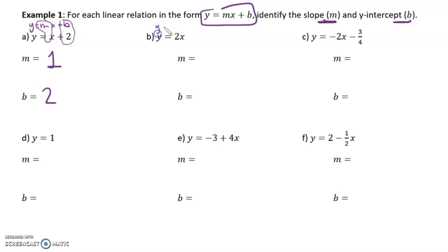Okay, for b, y equals mx plus b. So, m is 2. And see how we don't actually have a b here? That would mean that it would be plus 0, so 0.